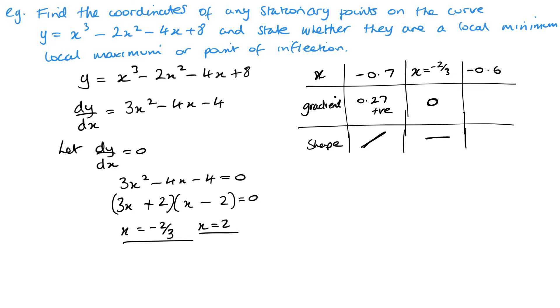Now this one's obviously 0 because that is the stationary point. Now we just want to check the -0.6, and that gives me -0.52, which is negative. Now if I look at what shape this is creating, this is creating a maximum, or a local maximum. So when x equals this -2/3, we have a local maximum.